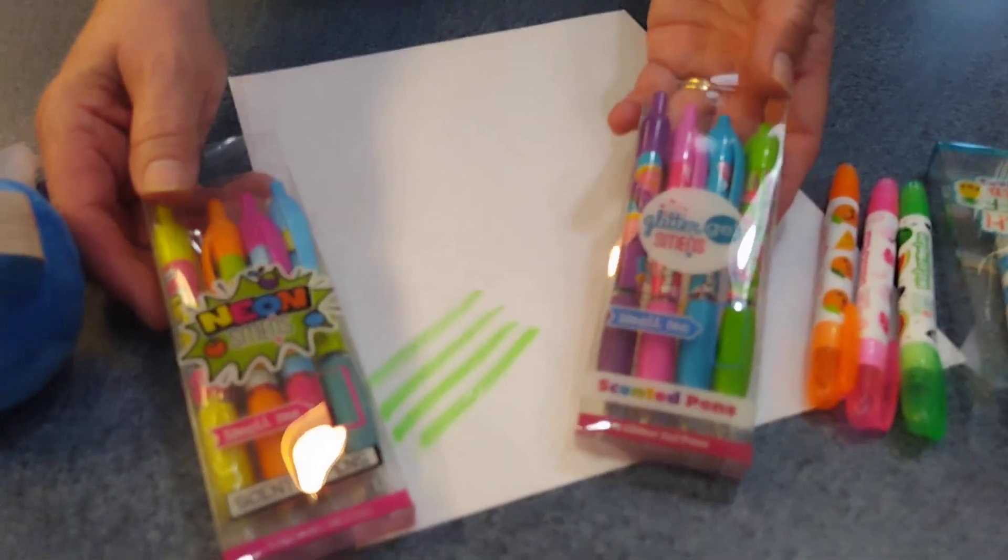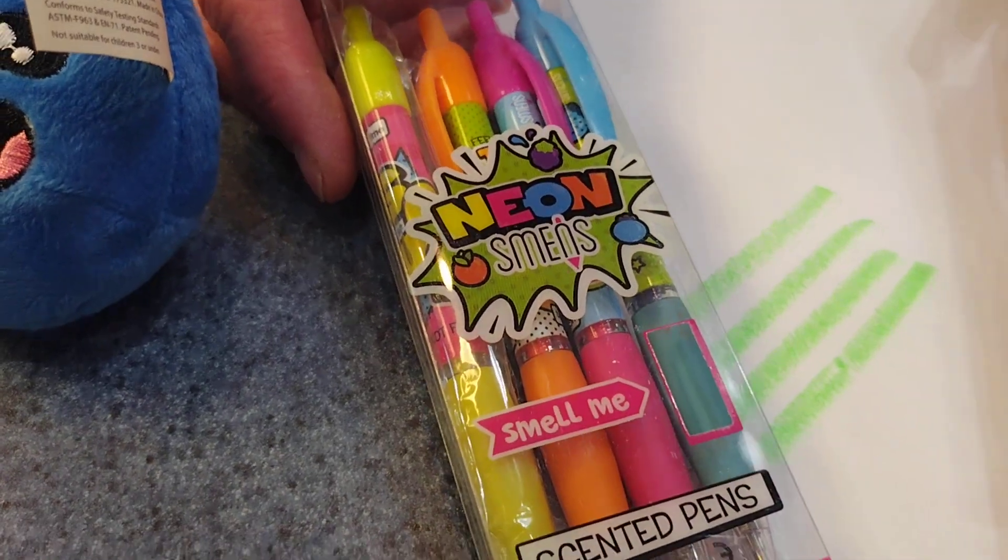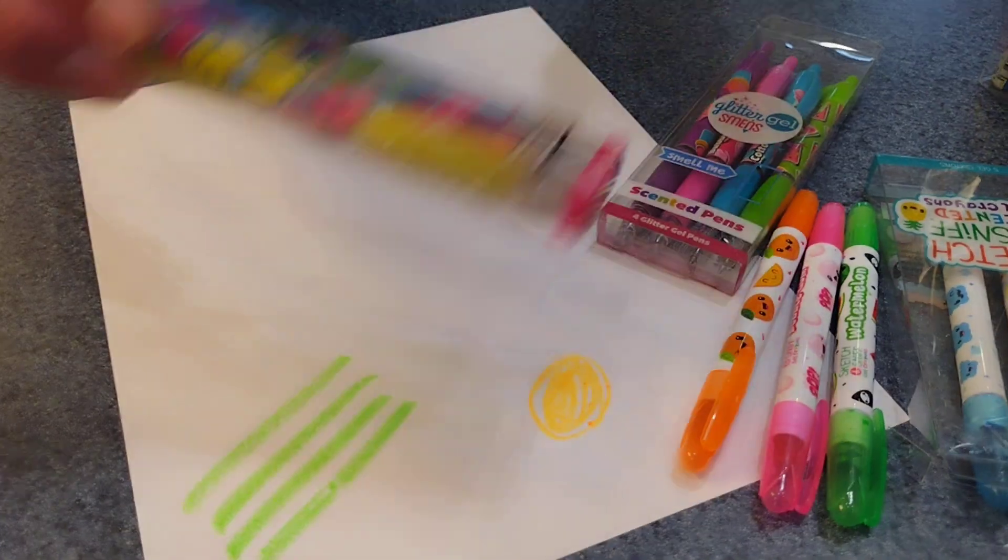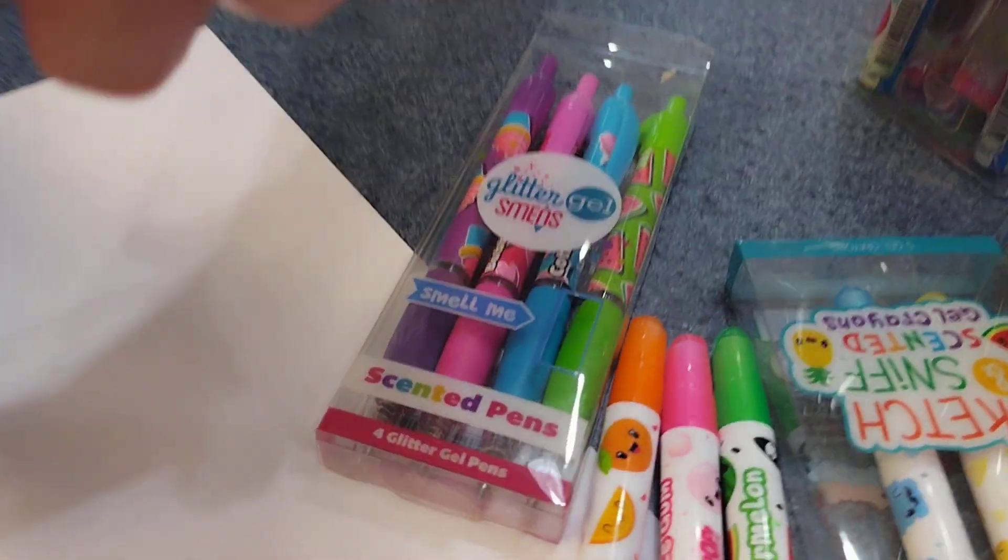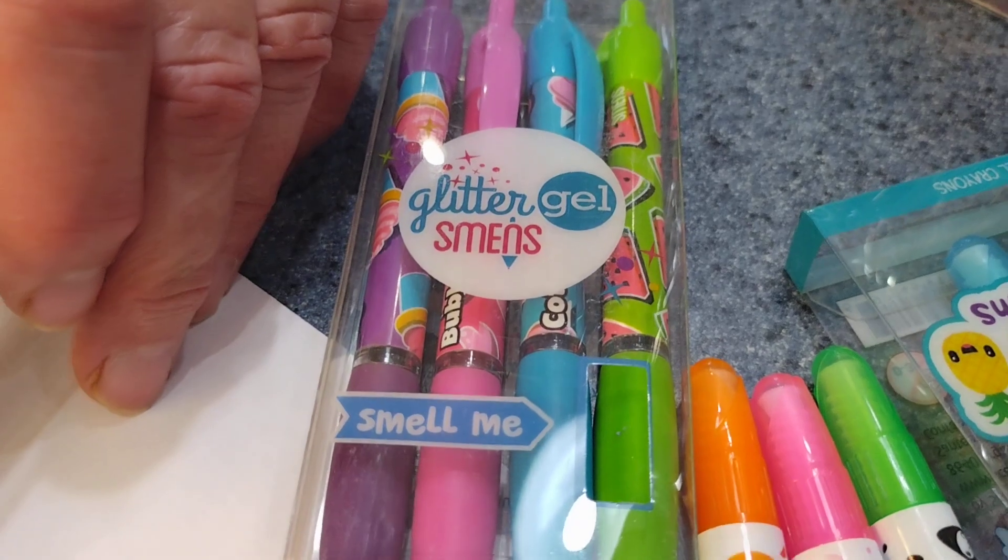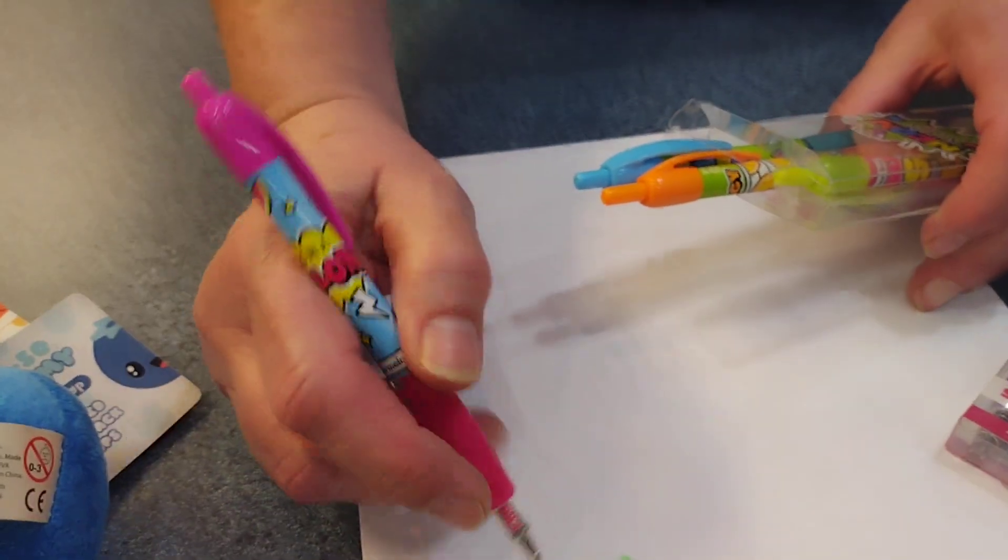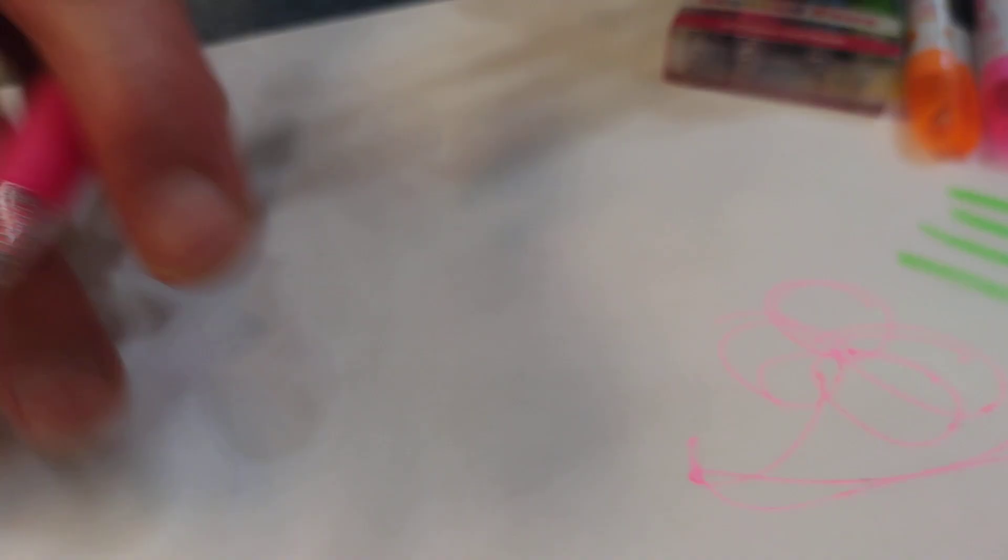Then there's two four packs of Smens. And one is a glitter and one is neon. So I'll show you the neon ones first. I'm going to show the glitter ones first. Okay. The neon ones are nice and bright. So that's the neon ones.